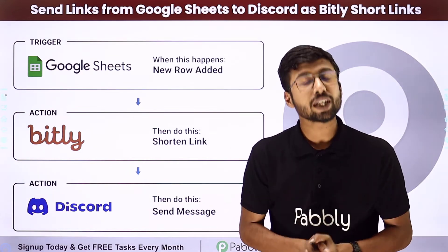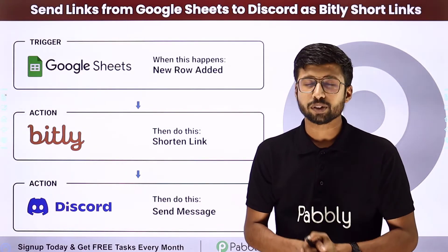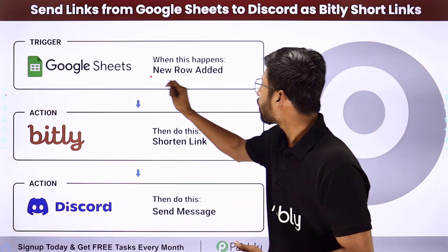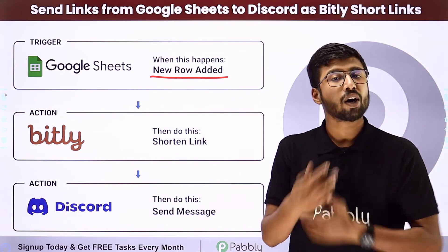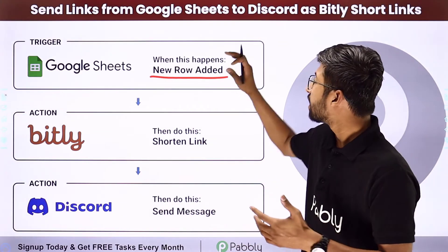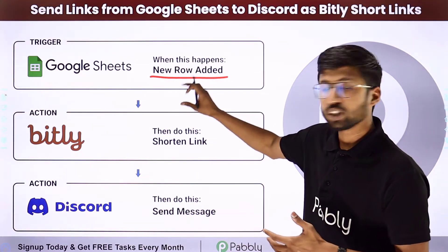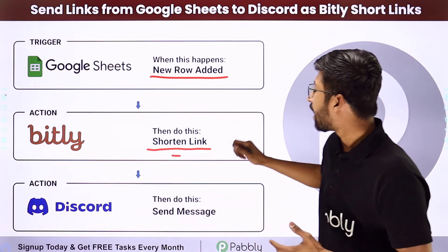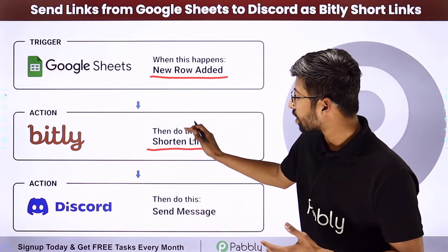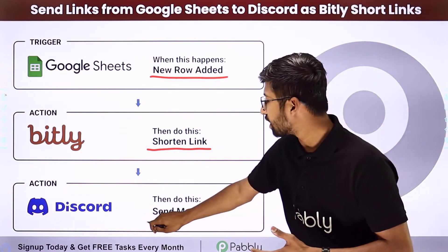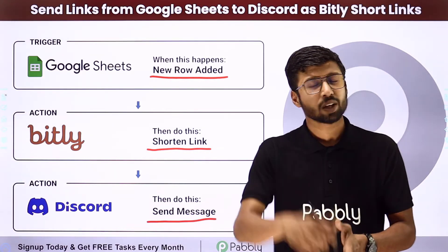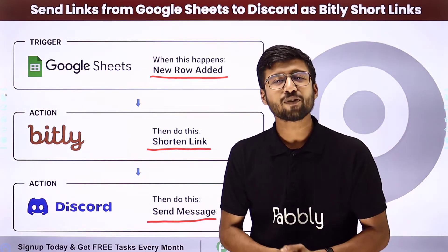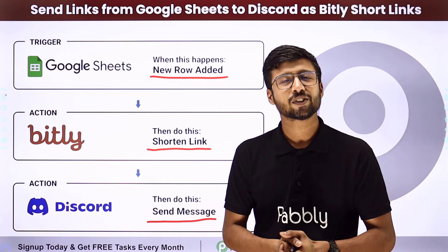You can completely automate this process. In this automation, whenever we add a new row of data in Google Sheet, automatically the links we add in Google Sheet will be shortened by Bitly, and then automatically the same shortened link will be sent as a message on our Discord channel. To know how to set up this automation, let's go to the screen.